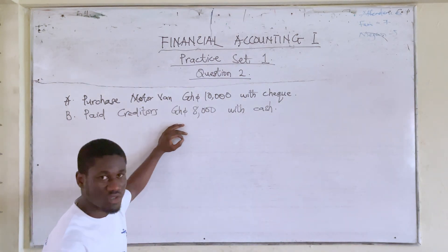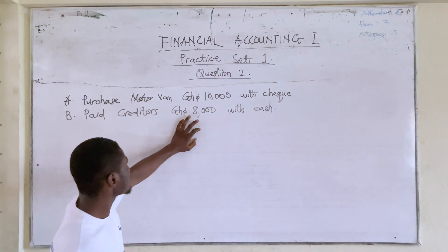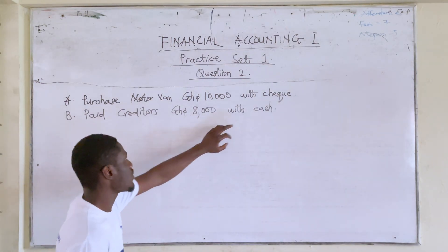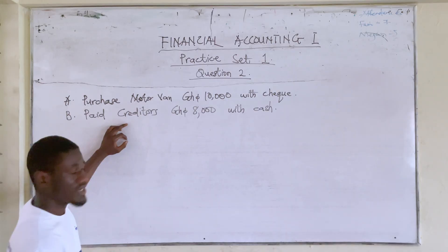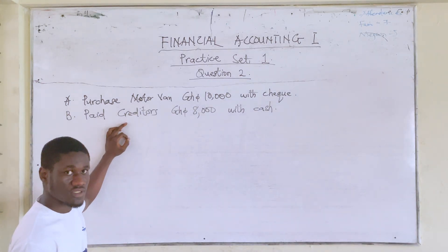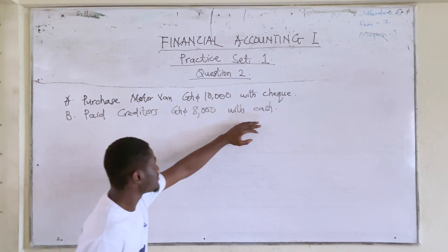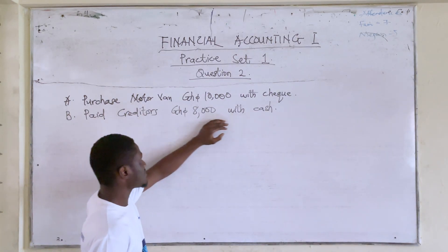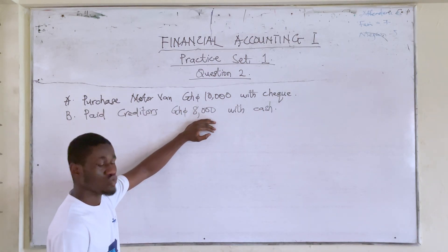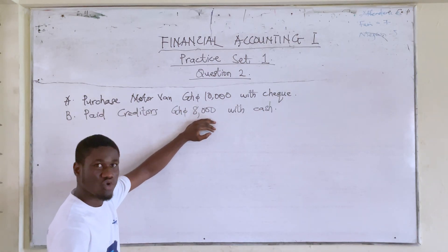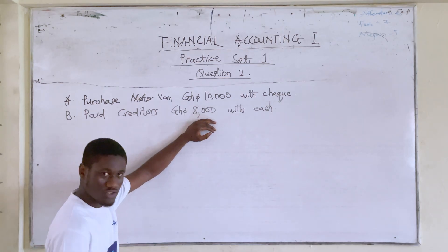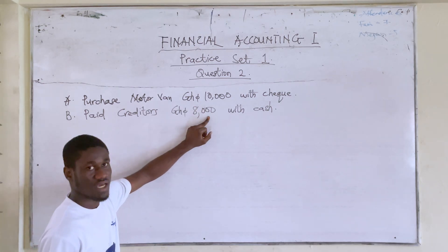All of them decreased here. Cash decreased by 8,000 and creditors also decreased by 8,000. We settled that debt of 8,000 — we paid them with 8,000 cash. So you can see that we no longer have that amount of cash; it has reduced by 8,000.